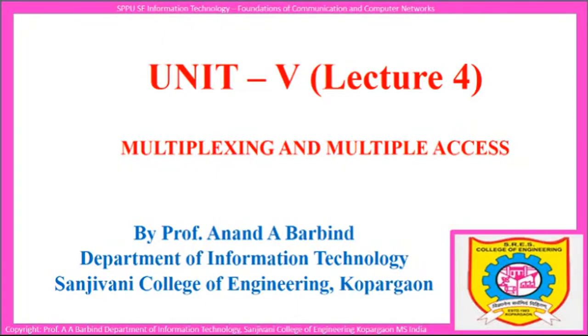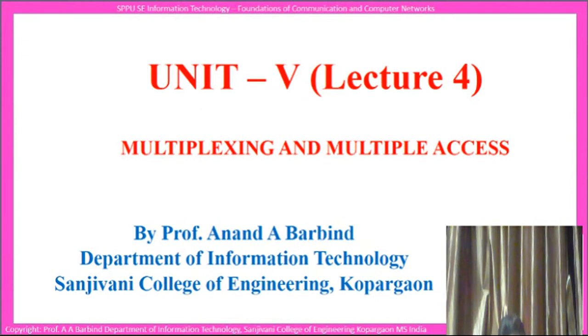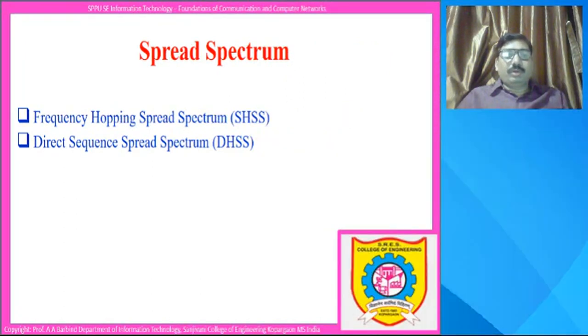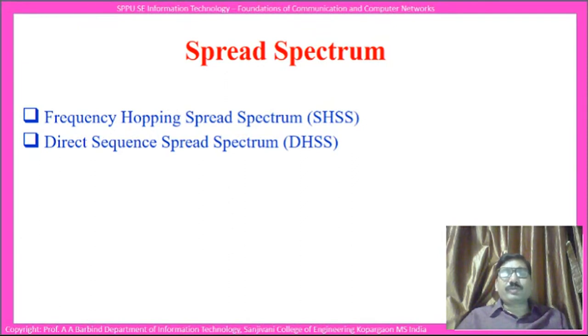Hello dear students, welcome to the fourth lecture of Unit 5 on multiplexing and multiple accesses. In the last lecture we discussed about the different time division multiplexing techniques. In this lecture we are going to discuss about spread spectrum, which is of two types: frequency hopping spread spectrum and direct sequence spread spectrum.